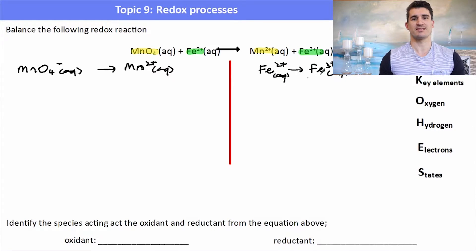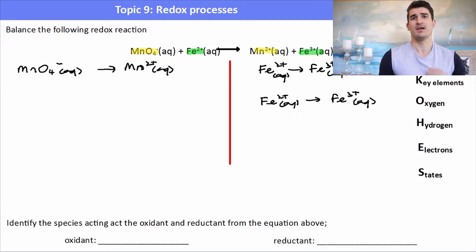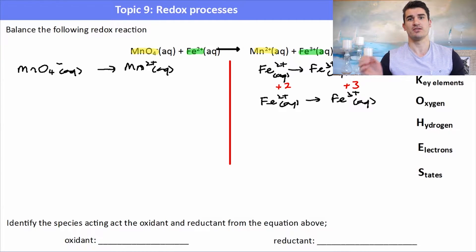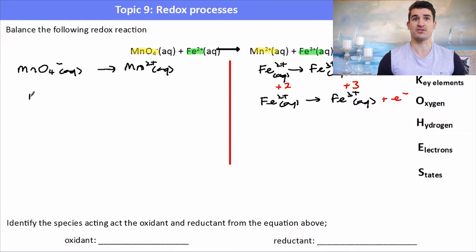I'll start with Fe2+ to Fe3+ as it's probably the easiest. Key elements: we have one Fe on both sides, so that's balanced. No oxygen and no hydrogen to balance either, so I skip those steps. Now I balance for electrons. The charge on the left is +2 and on the right is +3, so I add one electron to the right-hand side to bring that charge to +2. We always add electrons to the more positive side.